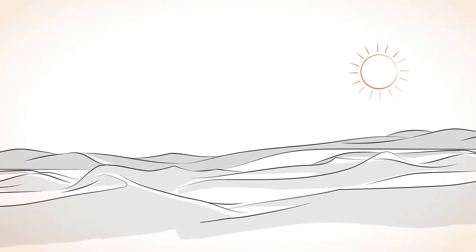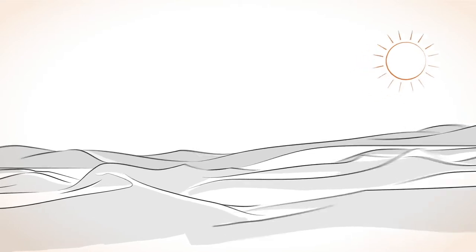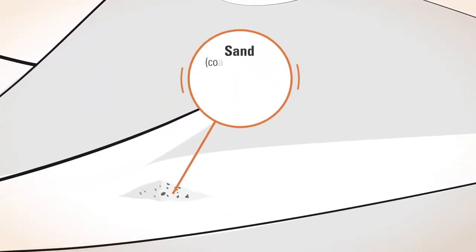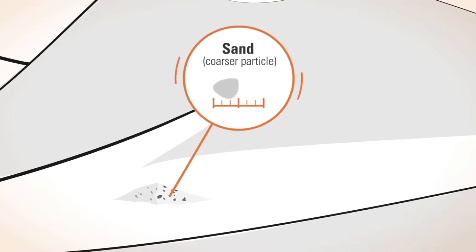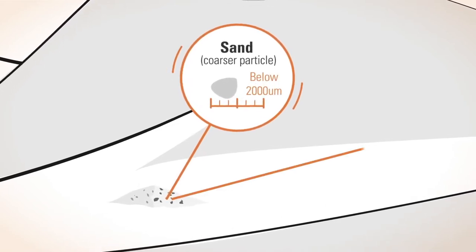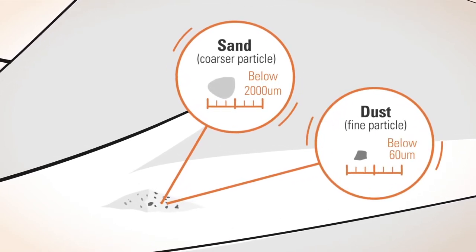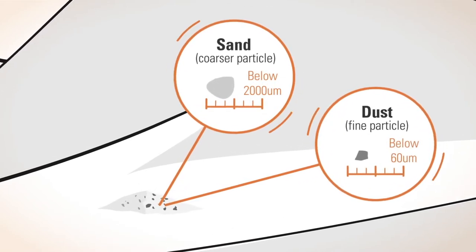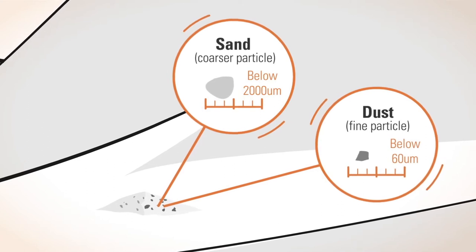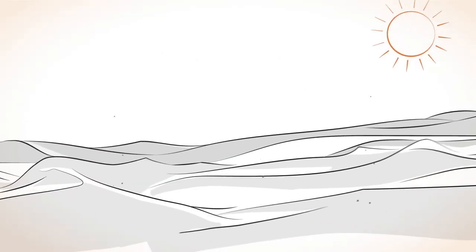Deserts are one of the main sources of sand and dust. These are far from being homogenous and include both mineral and organic elements. In a closer look, sand and dust come in a variety of shapes, sizes, and chemical composition.